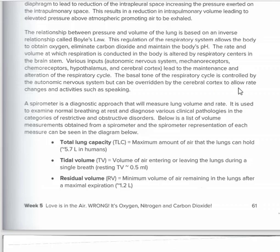If a child voluntarily holds their breath, when oxygen drops low enough they'll pass out and start breathing normally again — you really can't hold your breath until you die. With a spirometer we look at how much volume the lungs can hold and how fast air can be blown out. Some people have obstructions and can't exhale fast enough — they wouldn't even be able to blow out birthday candles. We'll discuss restrictive and obstructive disorders.